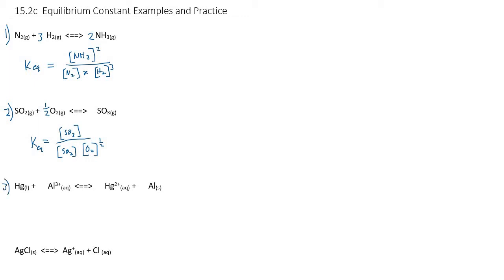For number three, we now have a pure liquid, aqueous solutions, and a solid. Let's balance it — actually, as stated it is balanced, but let's say there are three mercuries for every two aluminum 3+ ions, resulting in three mercury ions for every two aluminum solid. For the equilibrium expression, we do concentration of products: solids we cannot measure the concentration of, so we leave them out. We've got mercury 2+ ions to the power of three. That's the only product we can measure. Of our reactants, we have a pure liquid — pure liquid is 100% concentrated, so we can't measure that concentration. The only thing left is the aluminum ions: aluminum 3+ raised to the power of two.